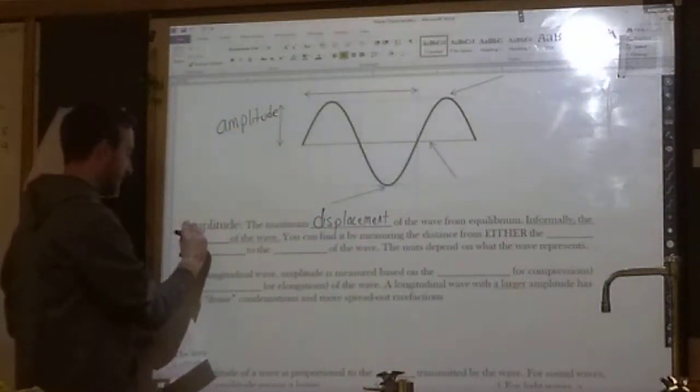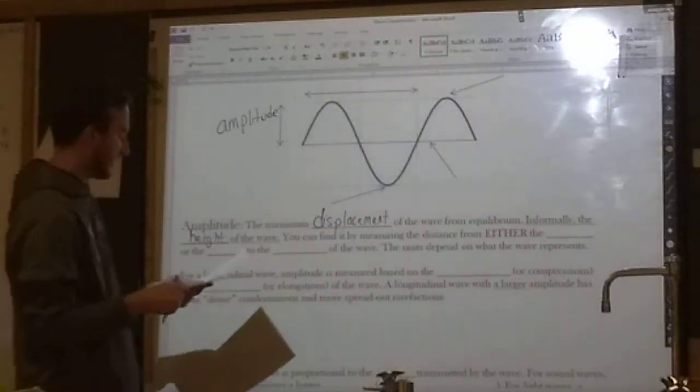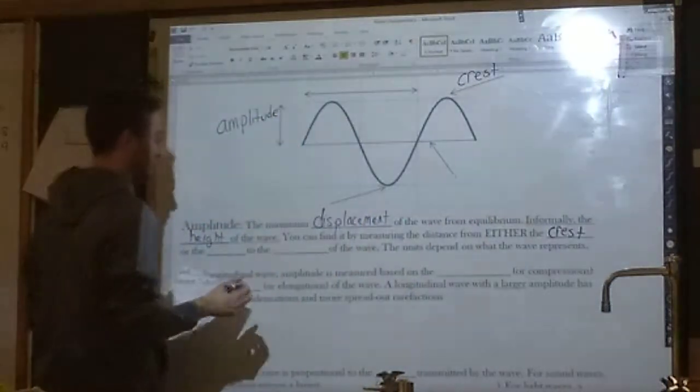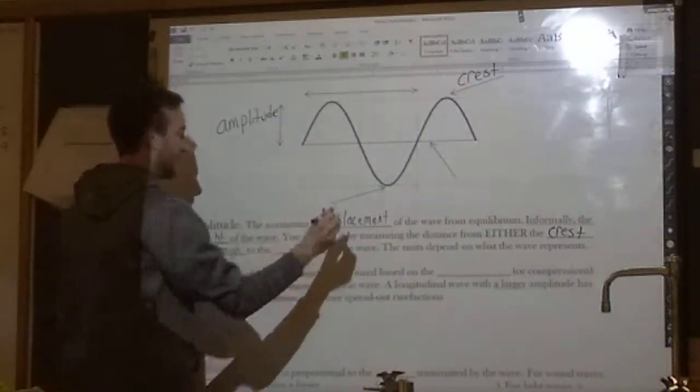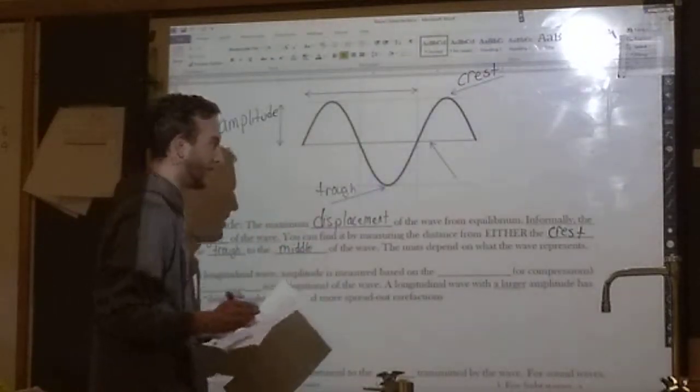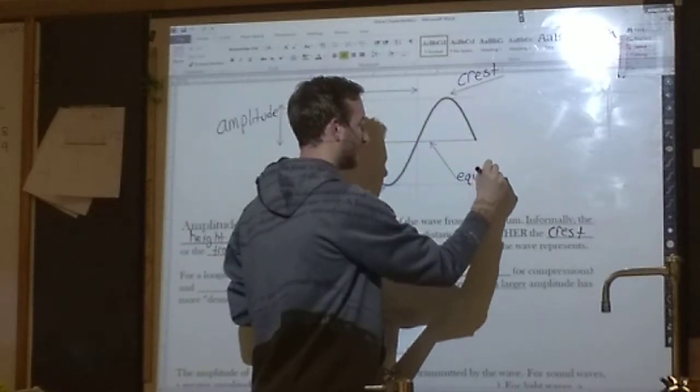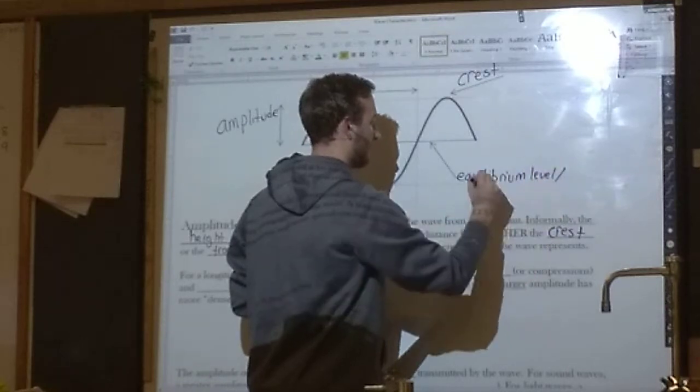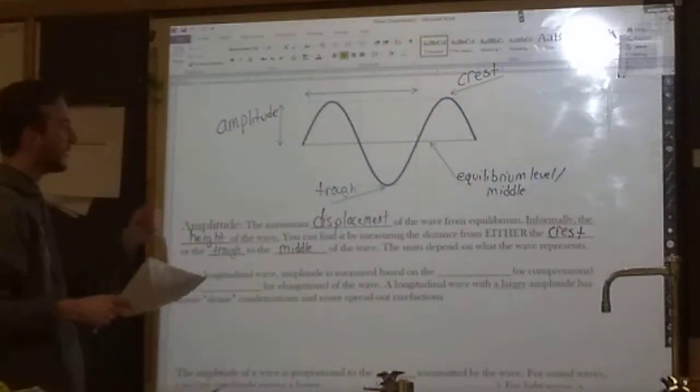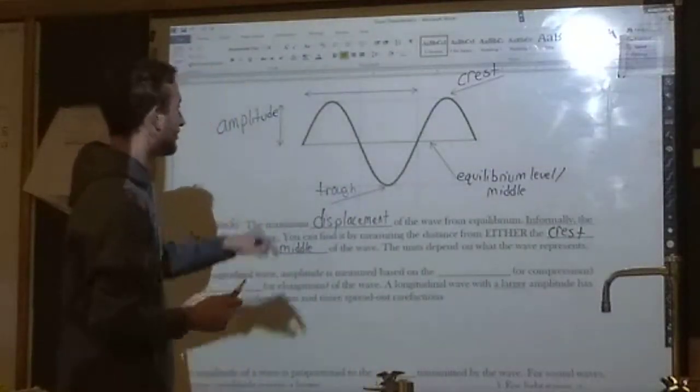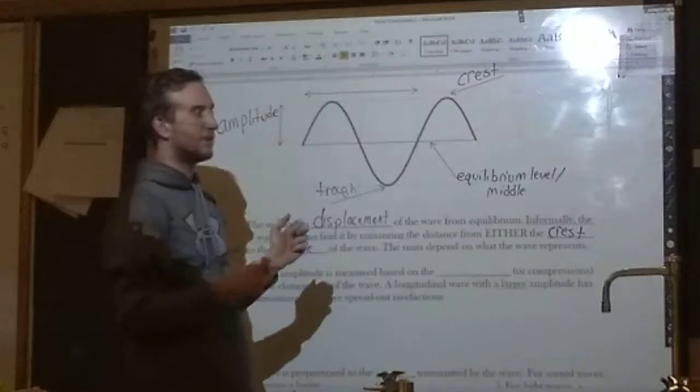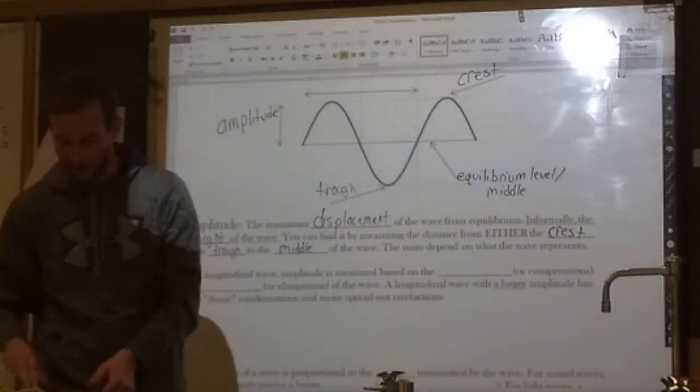Maximum displacement of the wave from equilibrium. Informally, you can call it the height of the wave. You find it by measuring the distance from either the crest. Crest is the high points of the wave, this is a crest. I've used that word a couple times so far. Or the trough, the low points of the wave. This right here is a trough. Two, the middle of the wave, the equilibrium line. So this right here, we can call this the equilibrium level, or if you want, just call it like the middle. The middle in terms of y-axis, not in terms of the x-axis. The units of the amplitude depend on what the wave represents. If it's like an ocean water wave, you would say the amplitude is in height. If it's a sound wave, you would say that the amplitude is in decibels for loudness. If it's a light wave, you would say that the amplitude is in units of brightness.